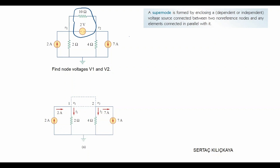Entering currents to this super node are just 2 amperes. It is equal to the leaving currents which are I1 plus I2 plus 7. And we can write I1 as V1 minus 0 over 2 ohms.